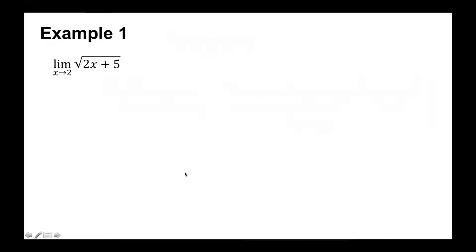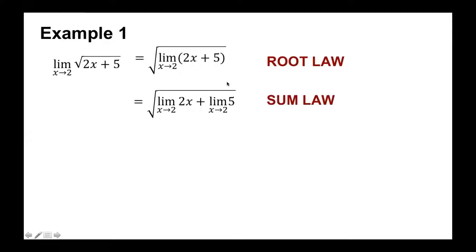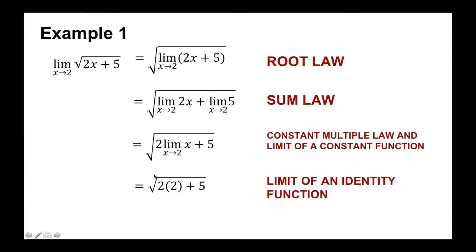Let's evaluate the limit of √(2x + 5) as x approaches 2, applying the basic limit laws. Applying the root law, this is equal to the square root of the entire quantity: the limit of (2x + 5) as x approaches 2. Then applying the sum law, this equals the square root of the limit of 2x plus the limit of 5, both as x approaches 2. Applying the constant multiple law and the limit of a constant function gives us √(2·2 + 5).